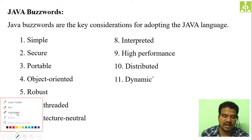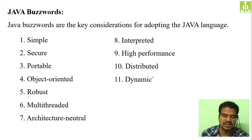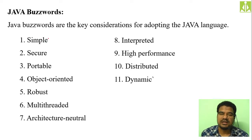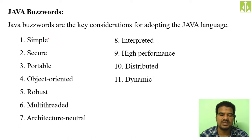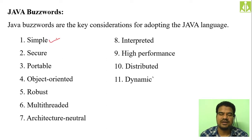Java is called simple because it is very easy to learn. When I say easy to learn, there are some prerequisites — you need to have the knowledge of C and C++. Once you have the knowledge of C and C++, it is very easy to learn Java programming language. That's why we say Java is a simple programming language.